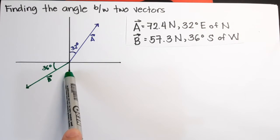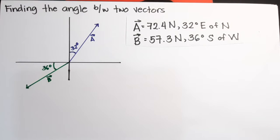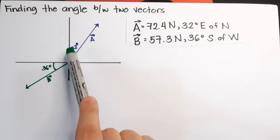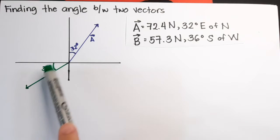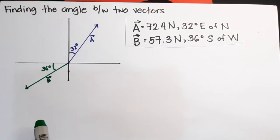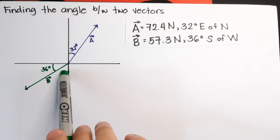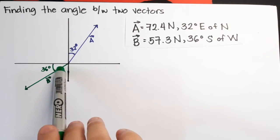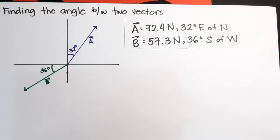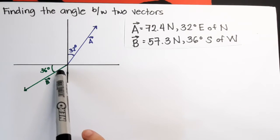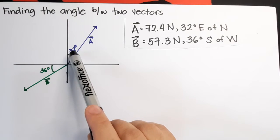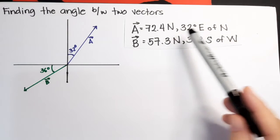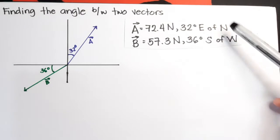It's either referenced to the y-axis or referenced to the x-axis. In this method, we will find the angle between them. Based on this, if this is 32 and this is 36 and this is 90, so that is 158. Or we can also have 360 minus 158, so that is 202. It can either be this one or this one. We can easily determine the angle between two vectors because the given are in cardinal direction with an angle.